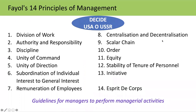The learning tip is to remember the mnemonic DECIDE USAOUSSR: D for Division of Work, E for Equity, C for Centralization and Decentralization, I for Initiative, D for Discipline, E for Esprit de Corps, U for Unity of Command, S for Subordination of Individual Interest to General Interest, A for Authority and Responsibility, O for Order, U for Unity of Direction, S for Scalar Chain, S for Stability of Tenure of Personnel, R for Remuneration. This learning tip will help you remember the names of all 14 principles.